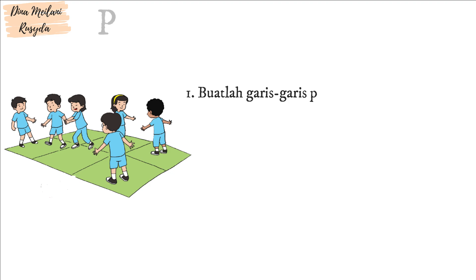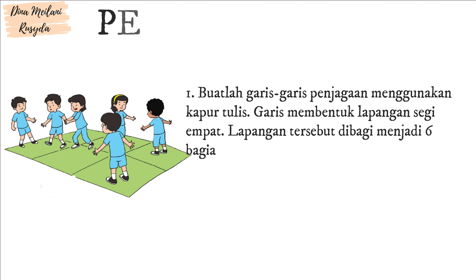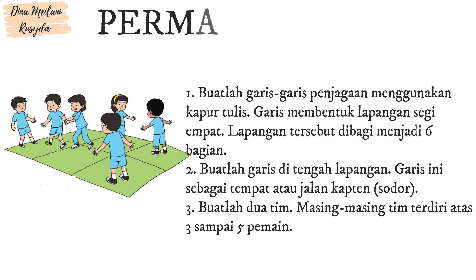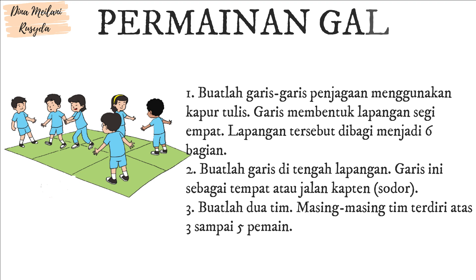Cara melakukan permainan galasin. Langkah 1: Buatlah garis-garis penjagaan menggunakan kapur tulis. Garis membentuk lapangan segi 4. Lapangan tersebut dibagi menjadi 6 bagian. Langkah 2: Buatlah garis di tengah lapangan. Garis ini sebagai tempat atau jalan kapten atau sodor.